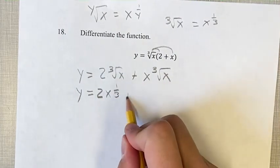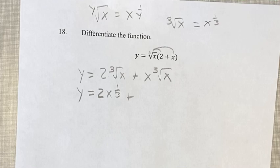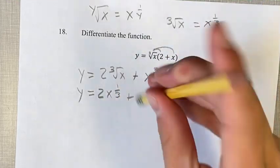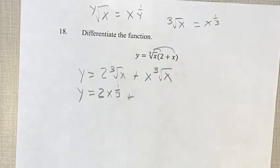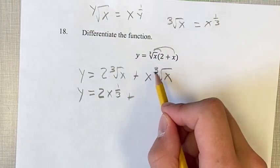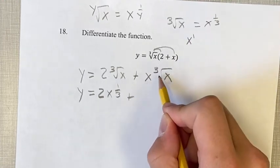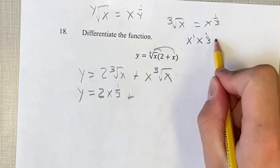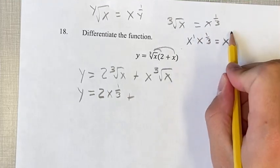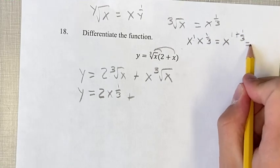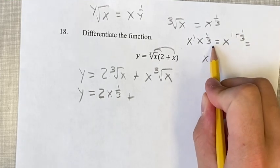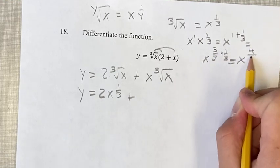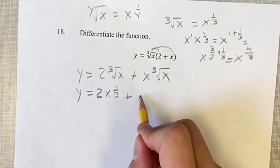2 times x to the 1 over 3 plus, and this is going to be a little bit more complicated, but we can get it into the same form. This is x times the cube root of x. And this is x to the 1 times the cube root of x we just found as x to the 1 third. When you're multiplying these two, you can add their exponents and turn it into one form, which is 1 plus 1 third. 1 plus 1 third is x to the 1, which is 3 thirds, plus 1 third, just to get the common denominator there, is x to the 4 thirds. So this is x to the 4 thirds.